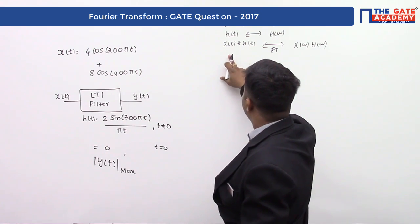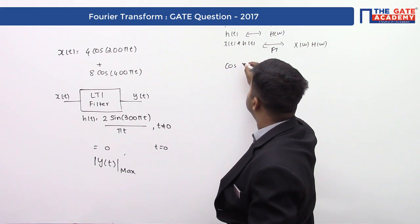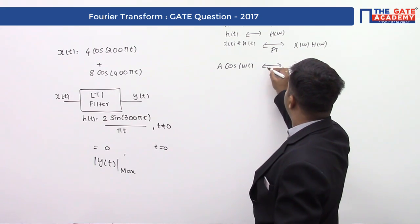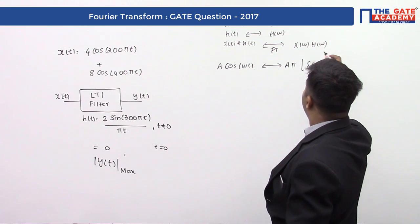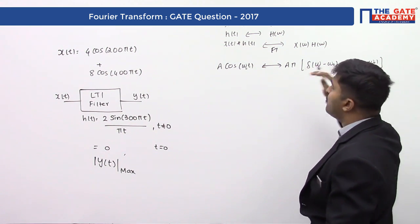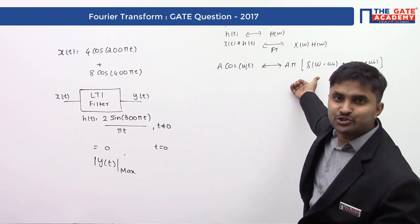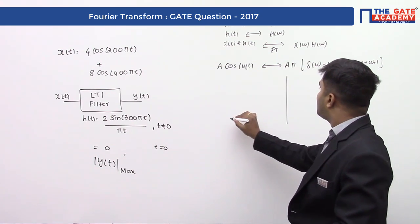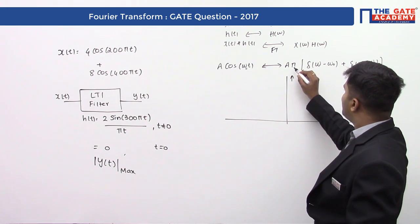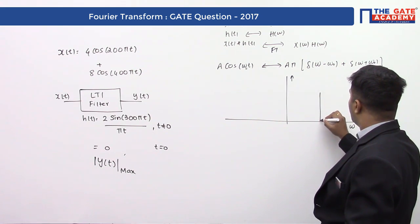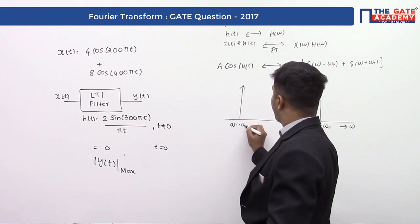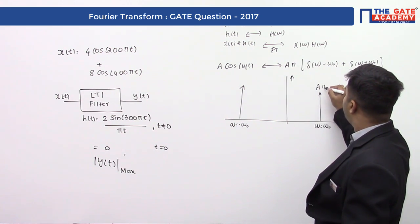Once you have a cosine function — a basic result from Fourier transform — if you have A·cos(ω₀t), its Fourier transform is Aπ[δ(ω − ω₀) + δ(ω + ω₀)]. Pictorially in the frequency domain, we plot the magnitude, and we get two impulses: one at ω = +ω₀ and one at ω = −ω₀, each with amplitude Aπ.